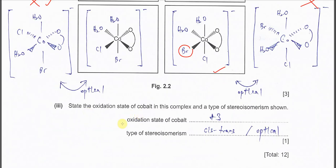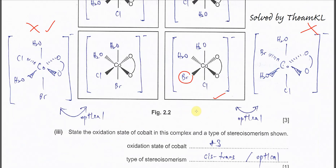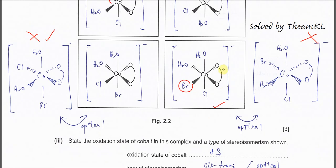So for all these complex ions, they can form either cis-trans or optical isomerism. Okay, so therefore part three. State the oxidation state of cobalt in this complex ion and the type of stereoisomer.